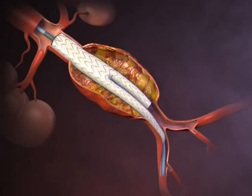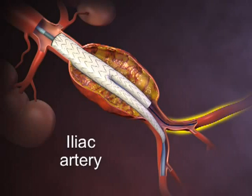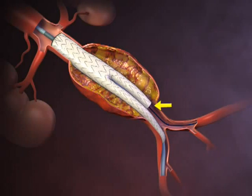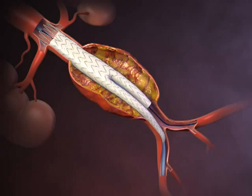A second guide wire is introduced through the contralateral iliac artery into the open lumen of the contralateral limb of the stent graft. The top cap is removed, deploying the suprarenal stent and anchoring the stent graft to the vessel wall.